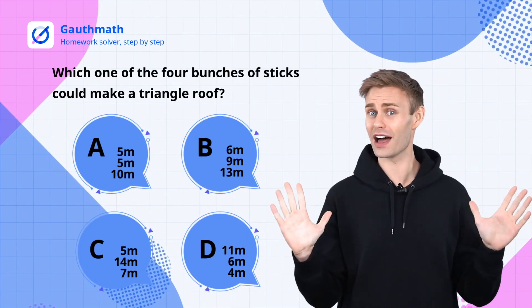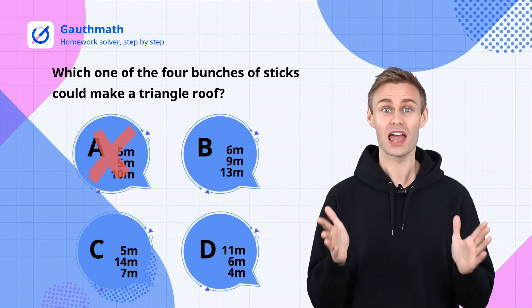In option A, 5 plus 5 equals 10. We could rule it out. Likewise, options C and D can be ruled out.